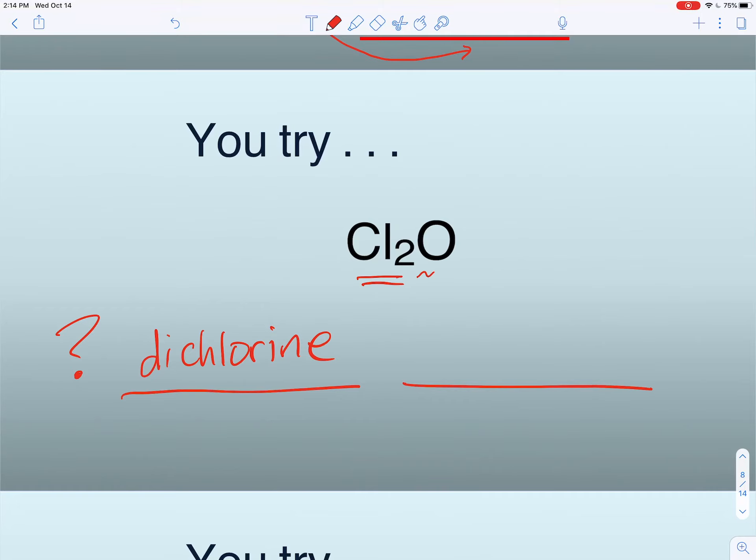It's dichlorine because there are two chlorines. And then we always want to use a prefix for the second part here. Mono is the prefix for one, and then oxygen becomes oxide.